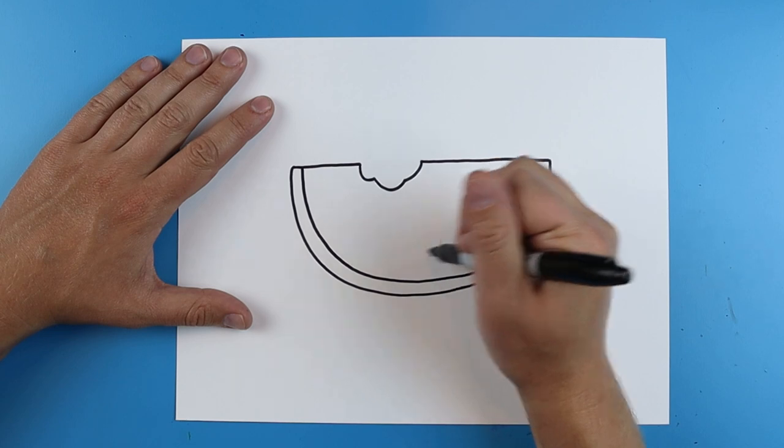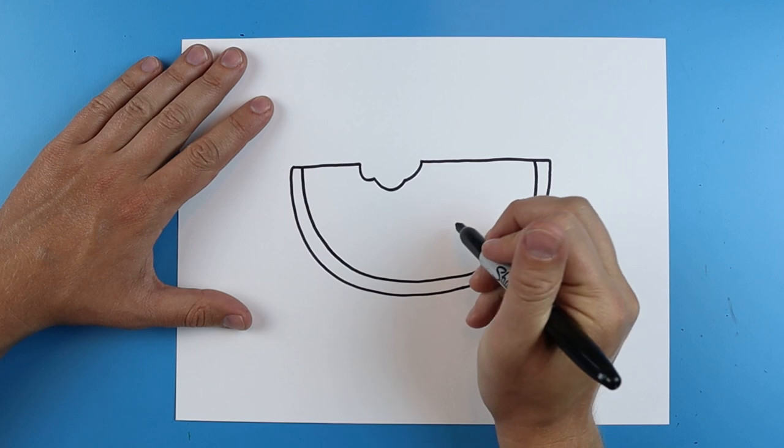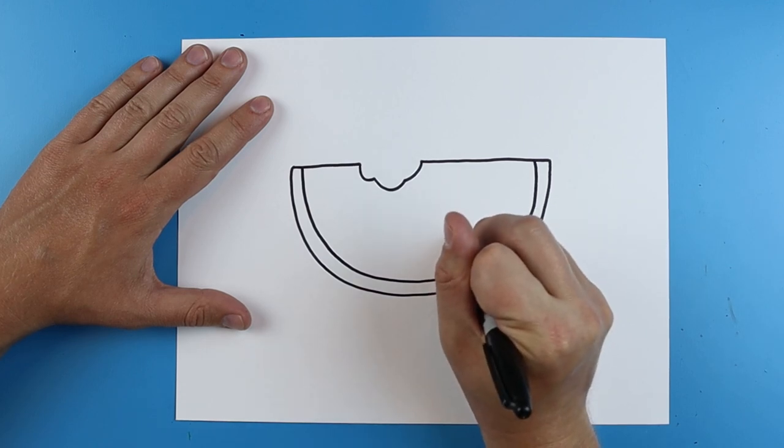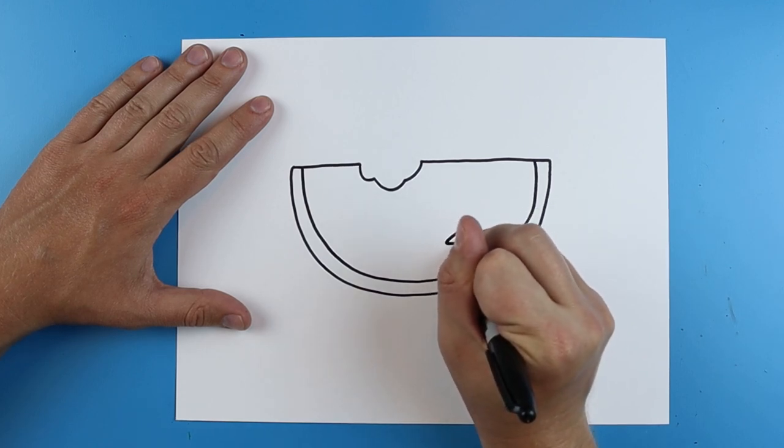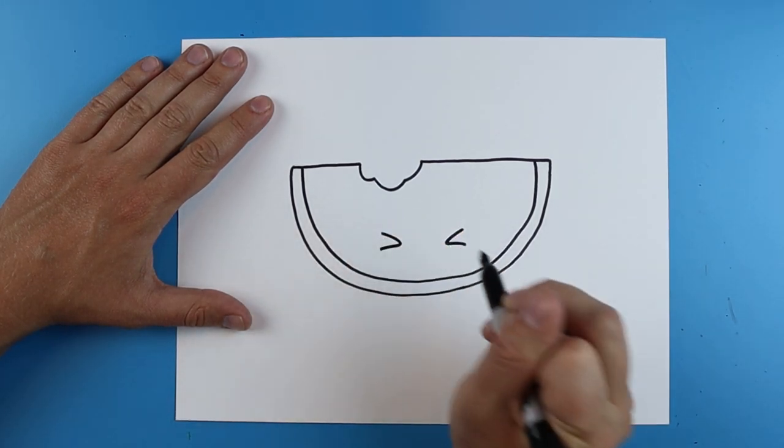Now right on here I want to give it a funny face. So starting here I'm just going to add a little line that's just going to kind of go down and then back out. And then I'm going to do the same thing over here just go down and then back out.